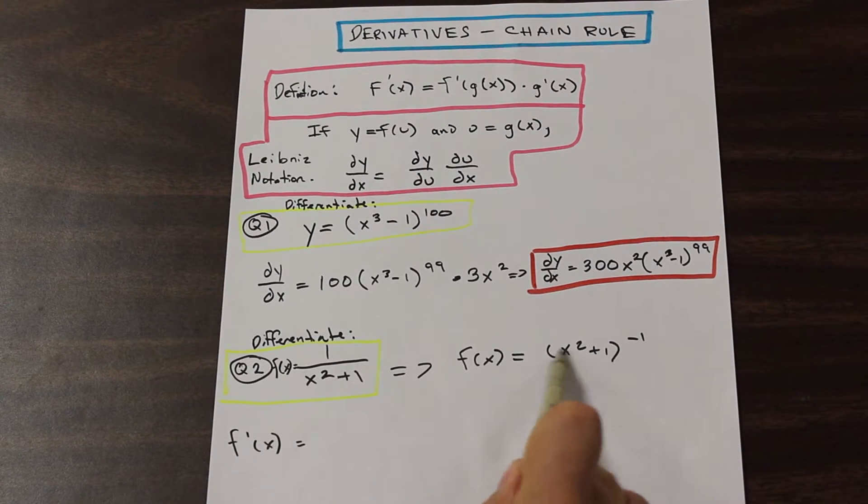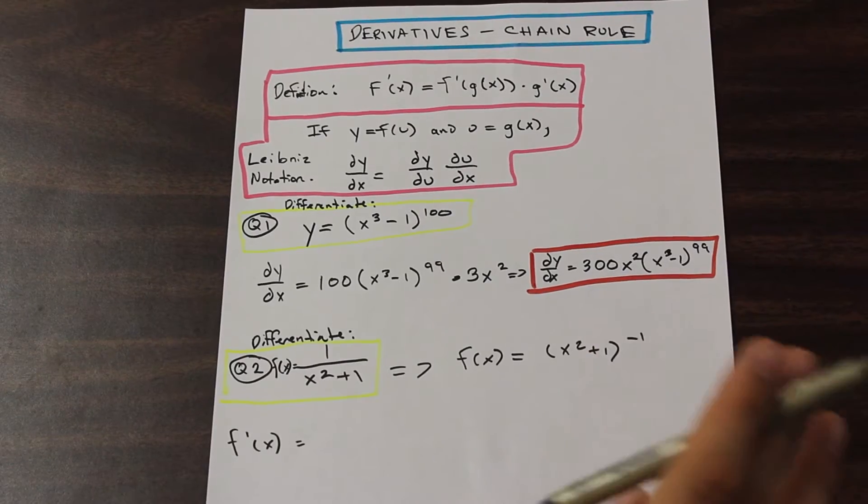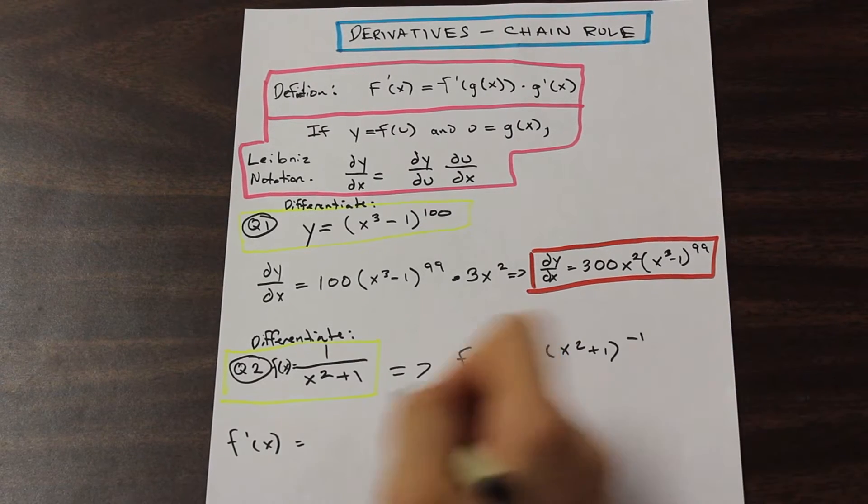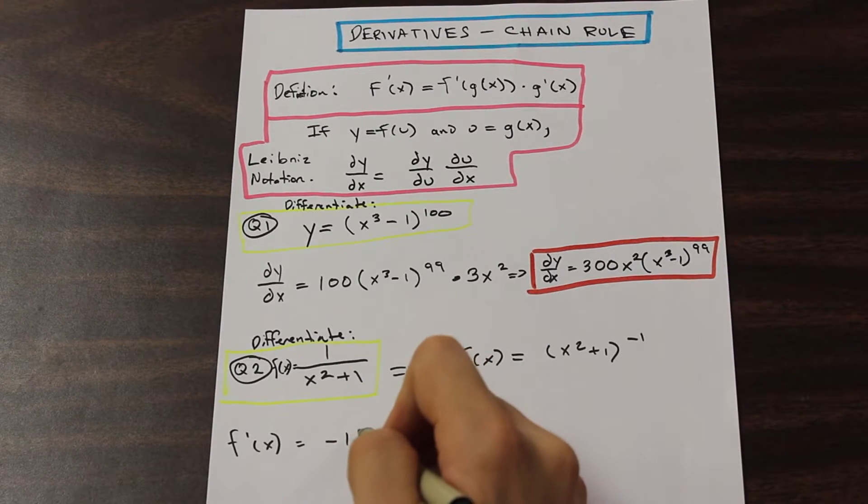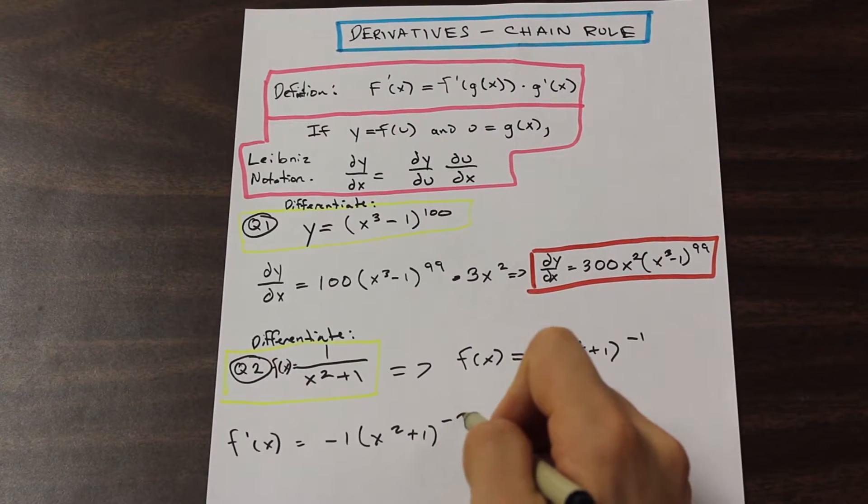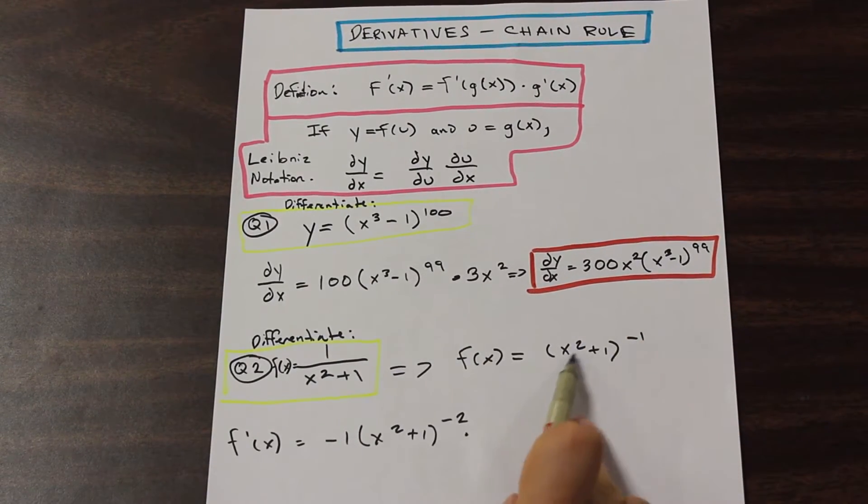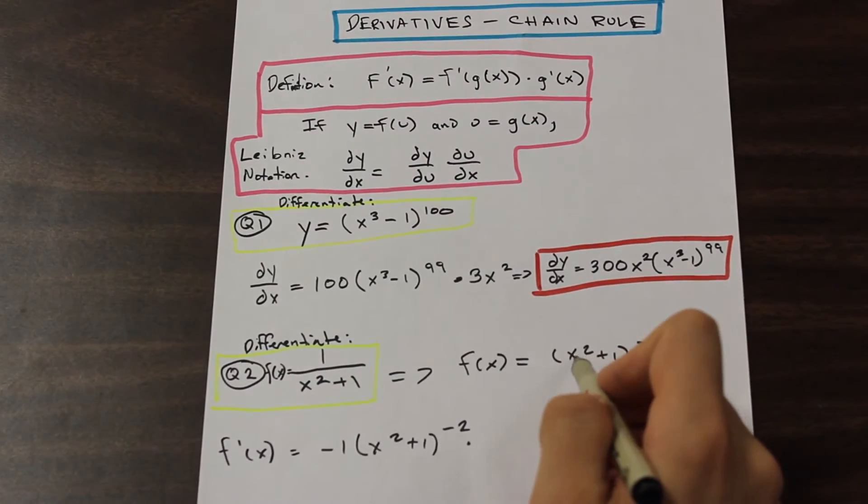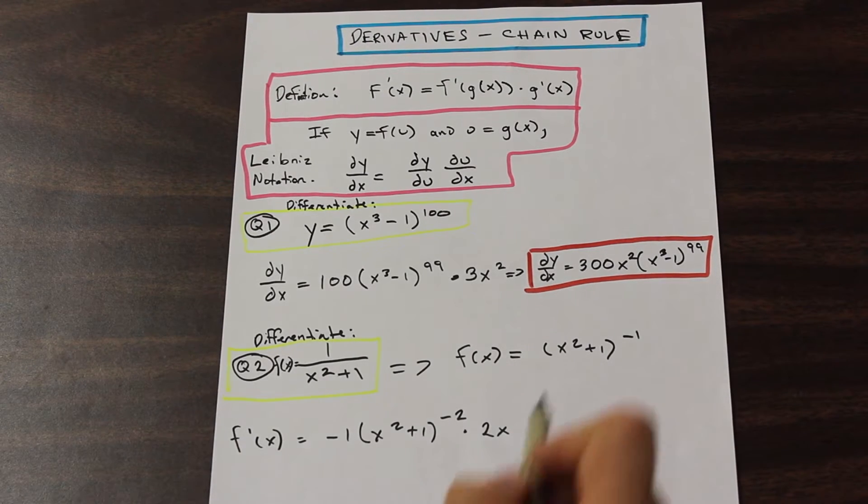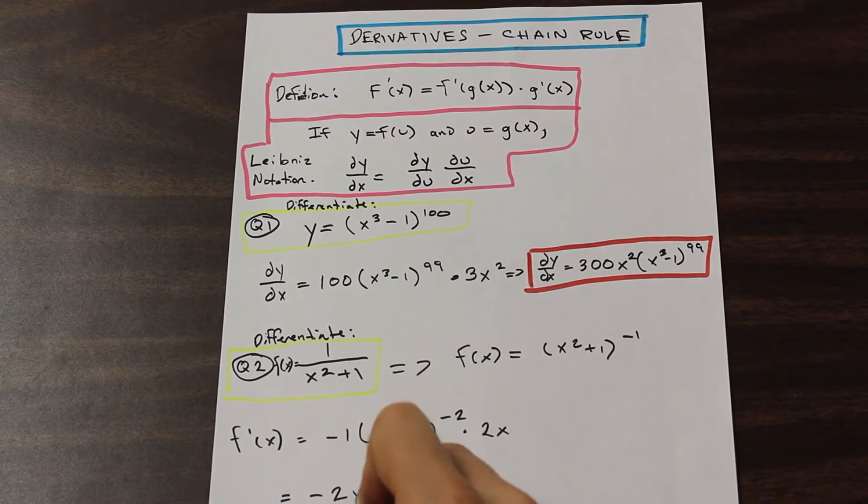So using the chain rule, let's look for the inner function here. Our inner function is X squared plus 1 right now. So let's imagine that that's just a single U, and let's take the derivative of that. So we have negative 1 here, so let's bring that negative 1 down. And then we have X squared plus 1. And then minus 1 minus 1 is going to be negative 2. And as we did before, we're going to multiply by the derivative of the inner function. So we have X squared plus 1. So the derivative of X squared is 2X, and the derivative of 1 is just 0, it's a constant.